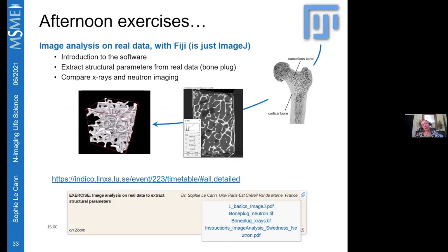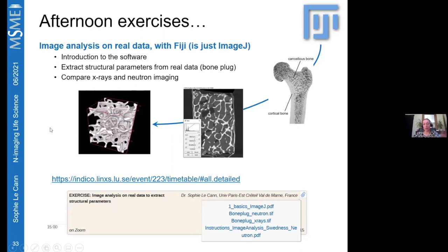For the afternoon exercise, you'll use ImageJ/BoneJ to analyze a porous cancellous bone plug from a femur — one image acquired with neutrons, one with x-rays. The goal is to explore the images, extract visualizations, and compare what each modality reveals, reflecting on the complementarity of neutrons and x-rays as discussed today. The data should be available in your downloadable link.